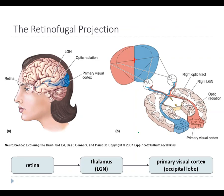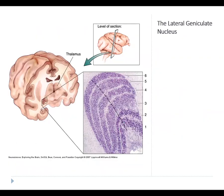We will mostly focus on the projection through the thalamus. There is a projection from the retina straight to the thalamus — specifically to a structure called the lateral geniculate nucleus on both sides. The axons coming out of the lateral geniculate nucleus then project up to the visual cortex. Next time we will talk about the lateral geniculate nucleus in more detail.